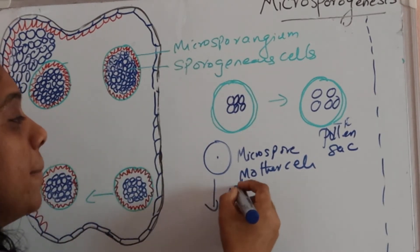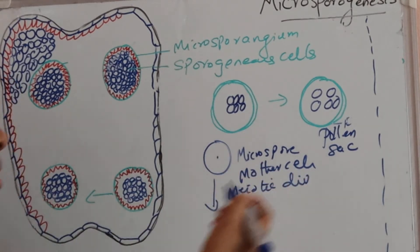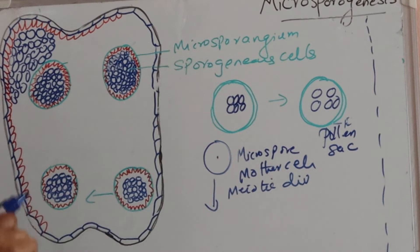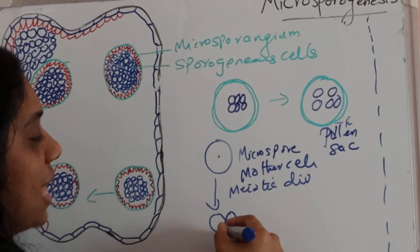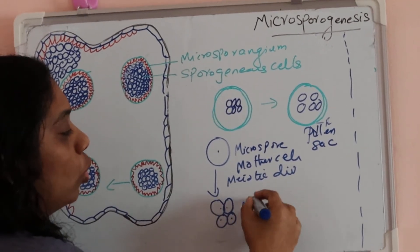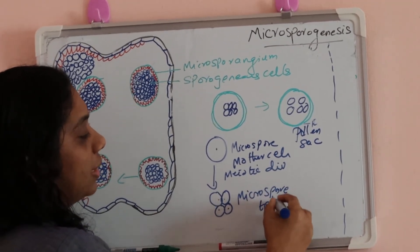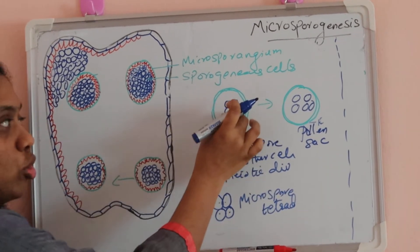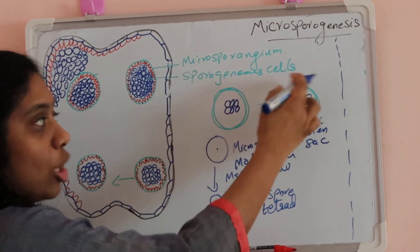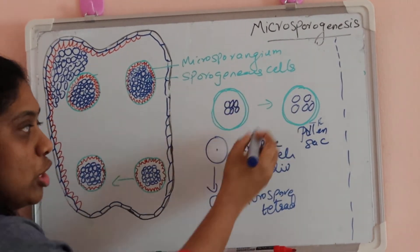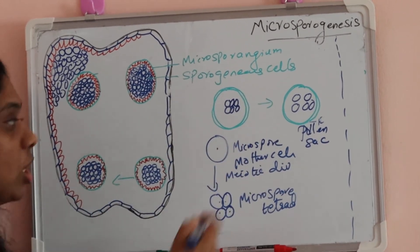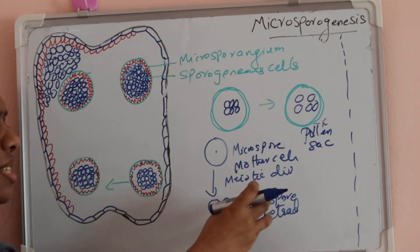The microspore mother cell undergoes meiotic division. We have studied meiotic division — meiosis gives rise to four daughter cells. So the microspore mother cell will undergo meiotic division and give rise to four daughter cells, and this is usually seen as a tetrad — the microspore tetrad. From the closely arranged sporogenous cells, when the anther matures and becomes loosely arranged, each microspore mother cell undergoes meiotic division to form the microspore tetrad.